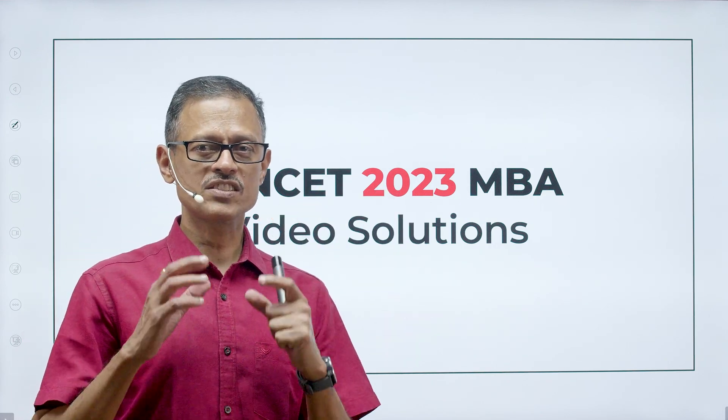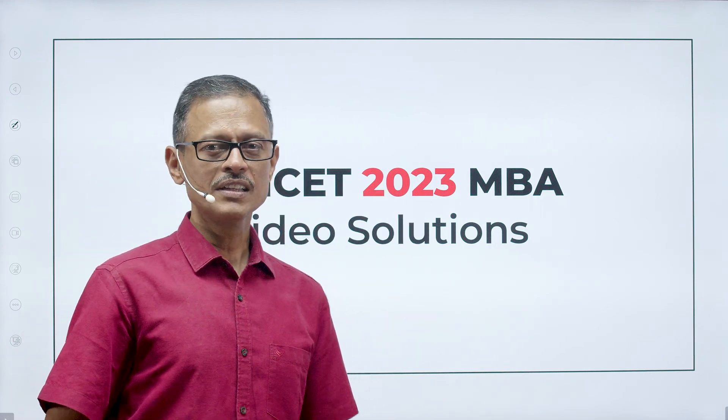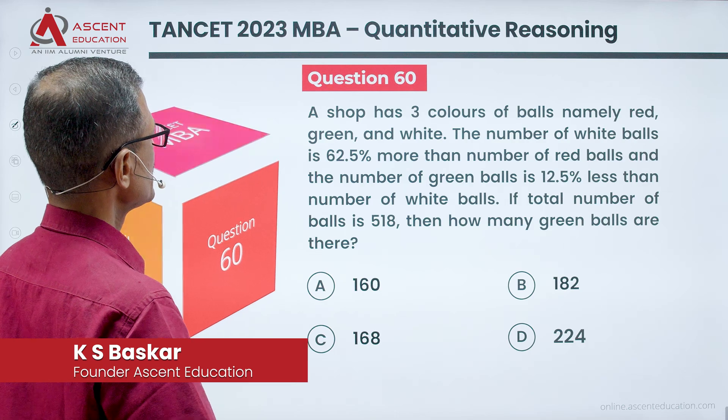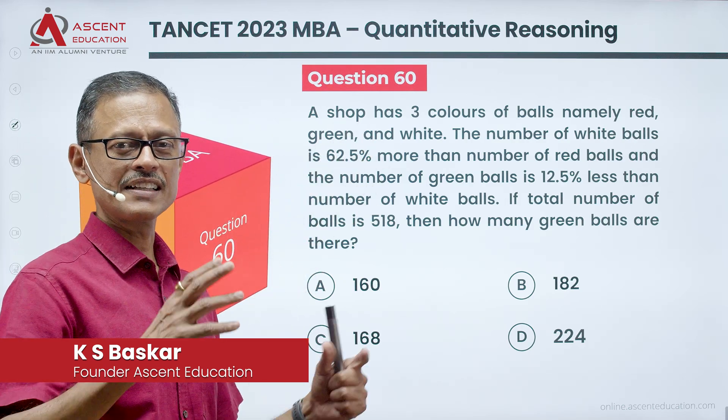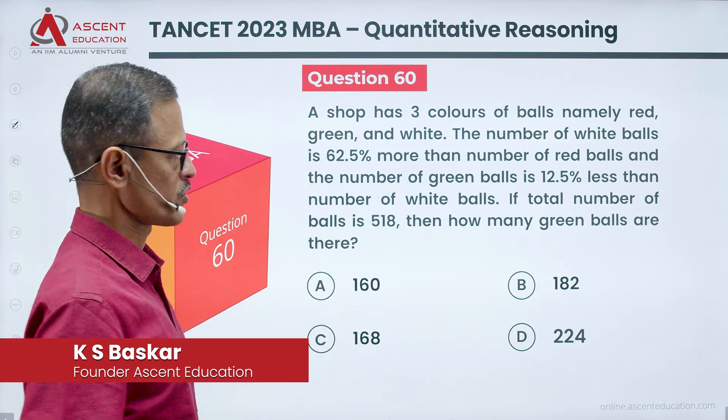TANCET 2023 MBA, last question, quantitative aptitude. We will be in question number 60. This is essentially a percentages question, equations question. If you combine them, you will be able to solve it. Easy question to solve.